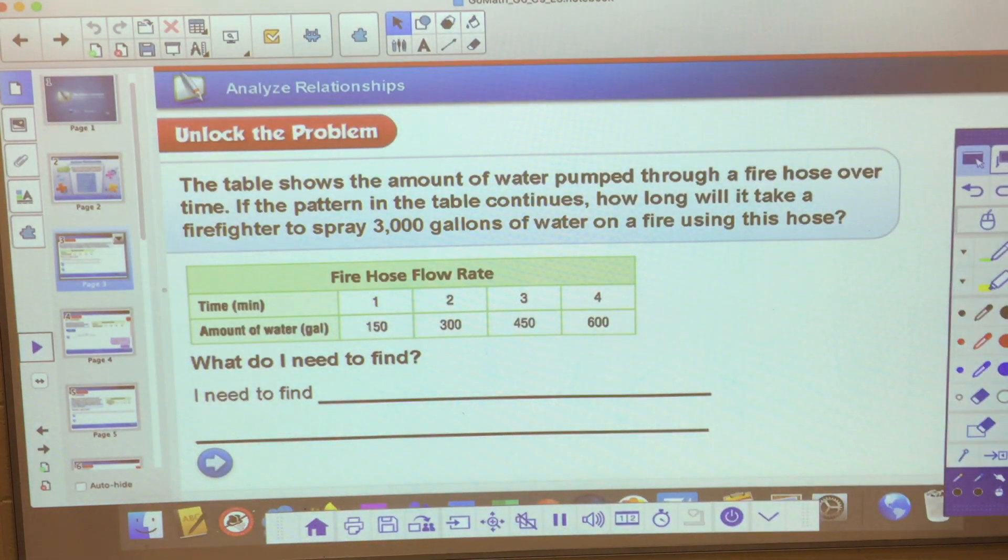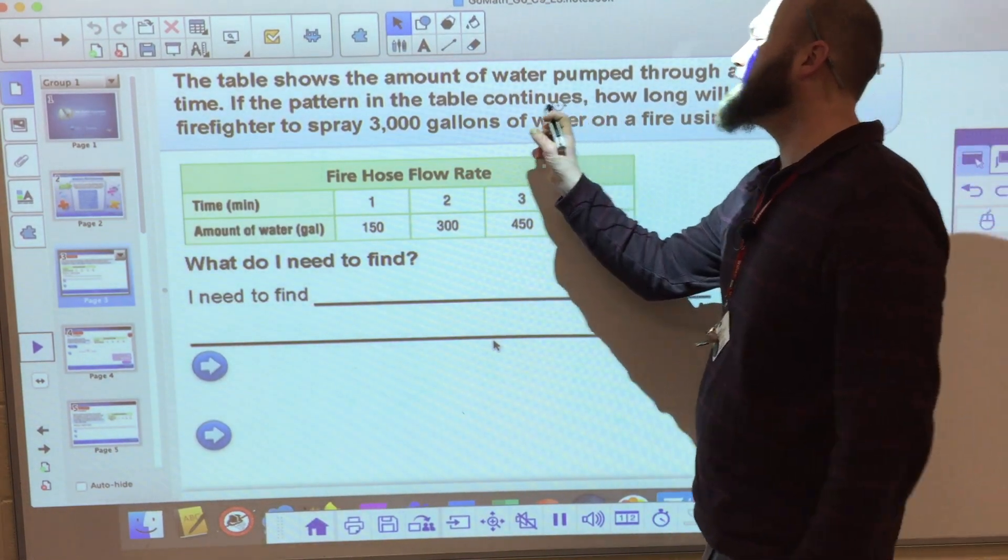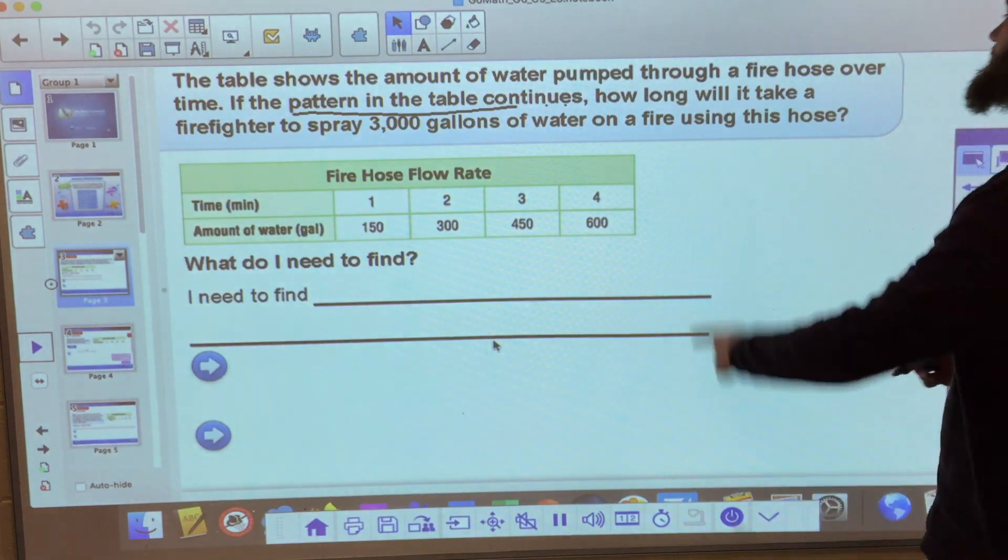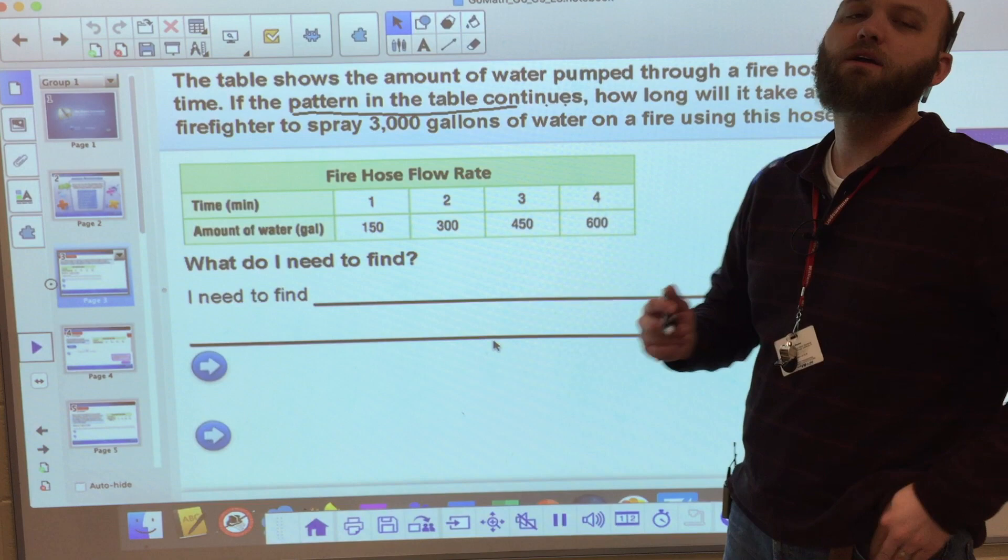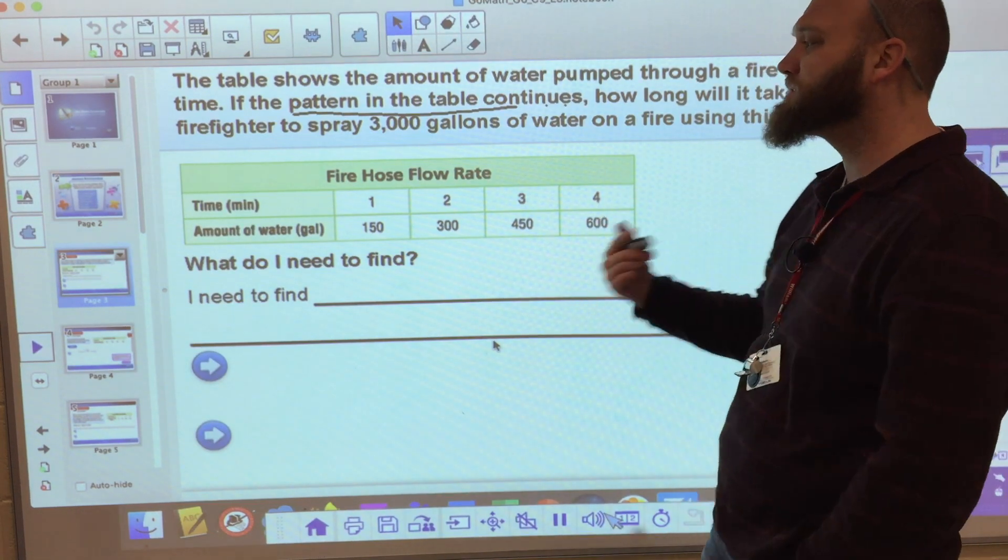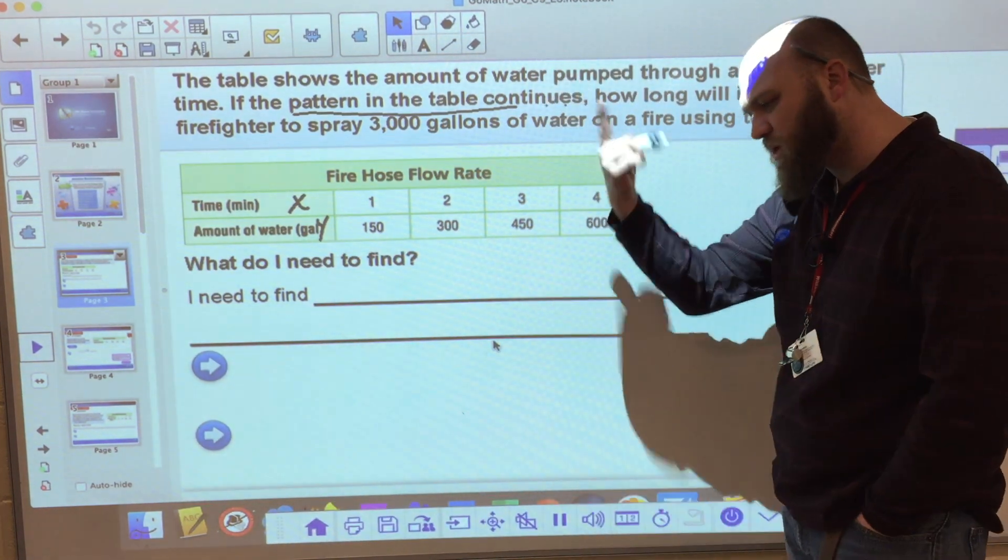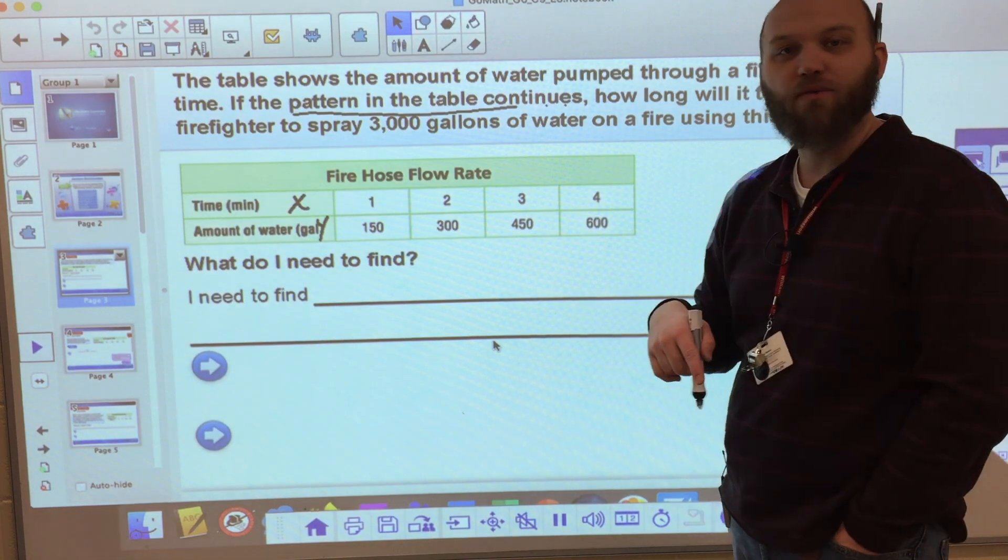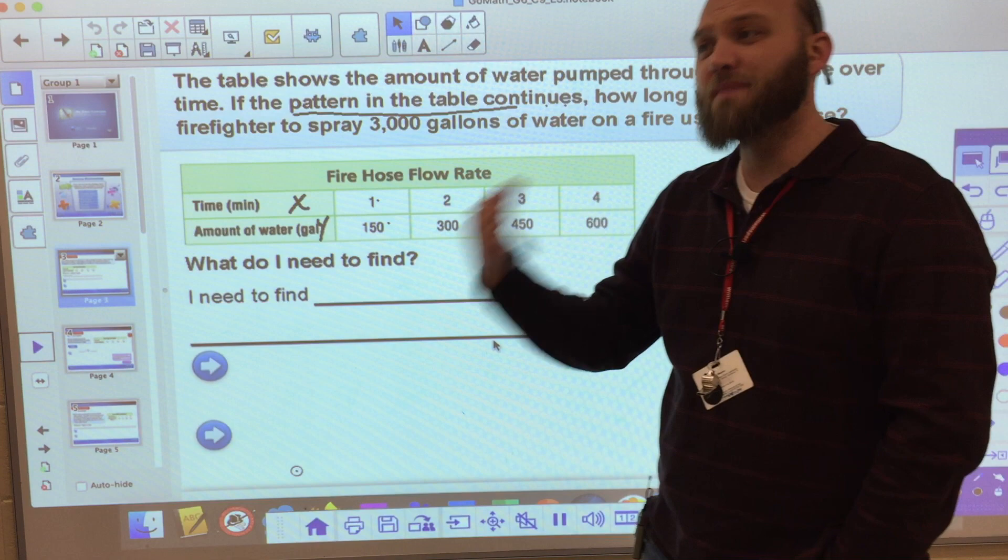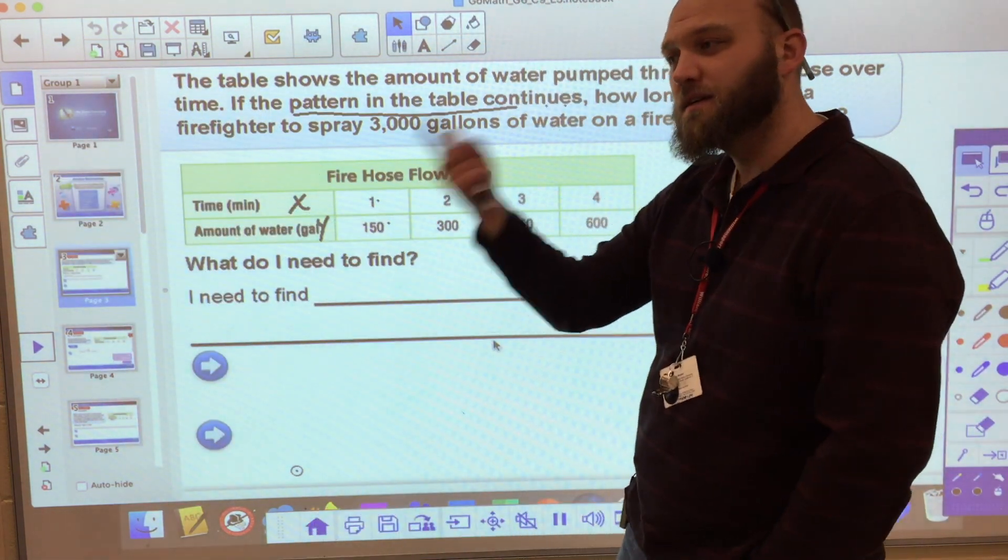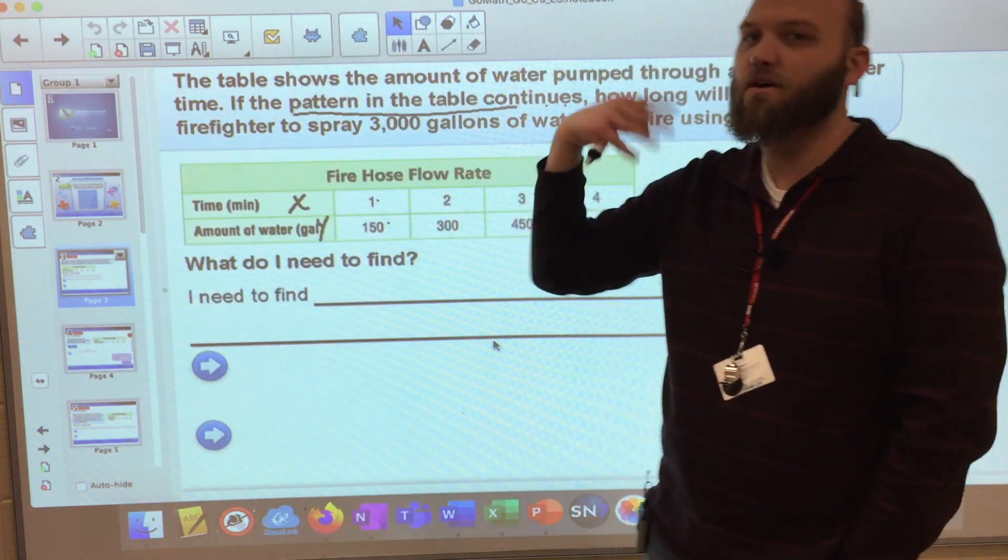First one we have here. Table shows the amount of water pumped through a fire hose over time. If the pattern in the table continues, how long will it take a firefighter to spray 3,000 gallons of water on a fire using this hose? So I have to look at what's the relationship between x and y. And they don't call them x and y in here, but I know that it's one or the other. It's in then out.